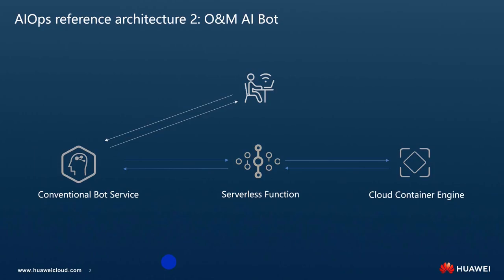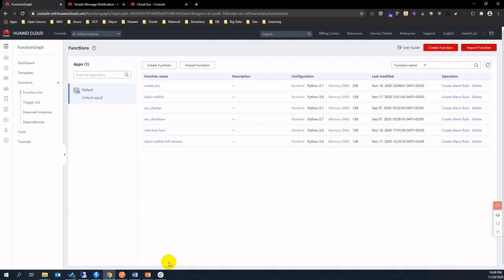Huawei Cloud Conversational Bot Service is an out-of-box AI service with machine learning features. By manual texting, you just define your ops flow, input-output, and train the data. Then you will get the results on the fly. Huawei Cloud CBS has a lot of built-in connectors with other Huawei Cloud services and it's easy to set up. This is the architecture design — let's see how to set up this environment from scratch.